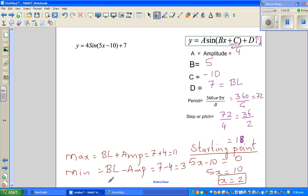7 minus 4, which is 3. So these are the 5 important facts that you need to know, or 6 in fact.